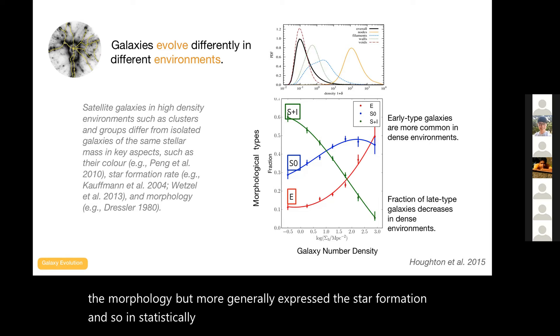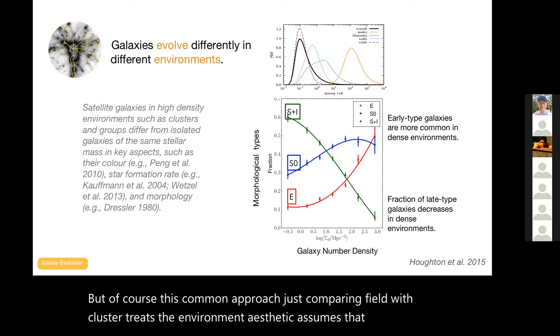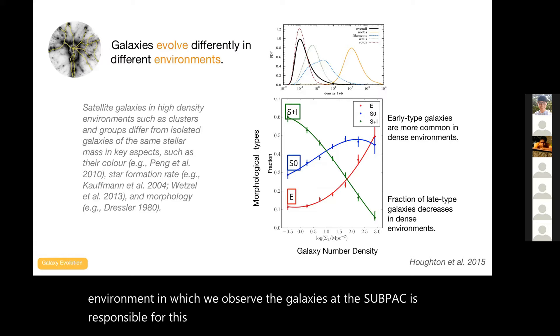But of course this common approach, just comparing field with cluster, treats the environment as static, assumes that the environment in which we observe the galaxies at this epoch is responsible for this transformation. But we've seen that that isn't the case, that we have a whole range of densities in between and different environments including groups, including filaments. So this assumption that a galaxy falls into a cluster as an isolated system is an oversimplification.